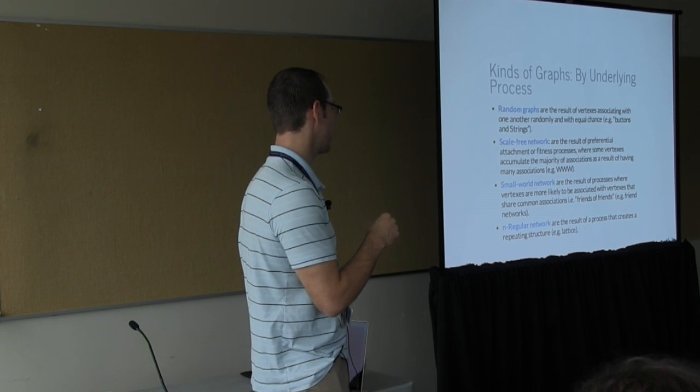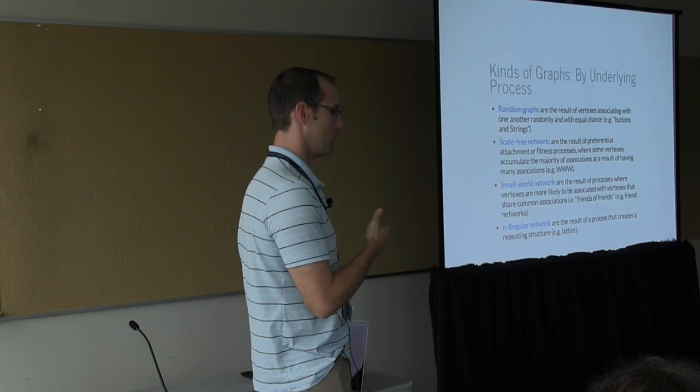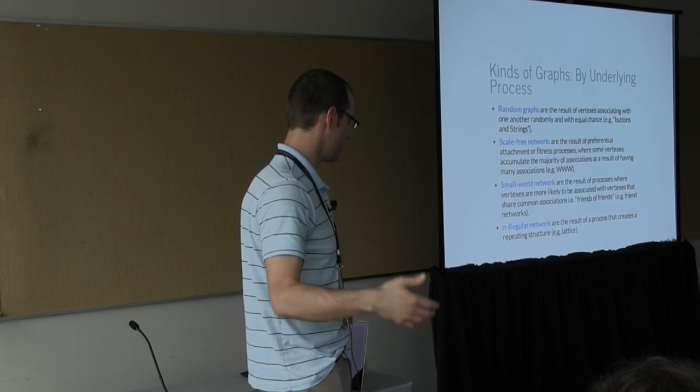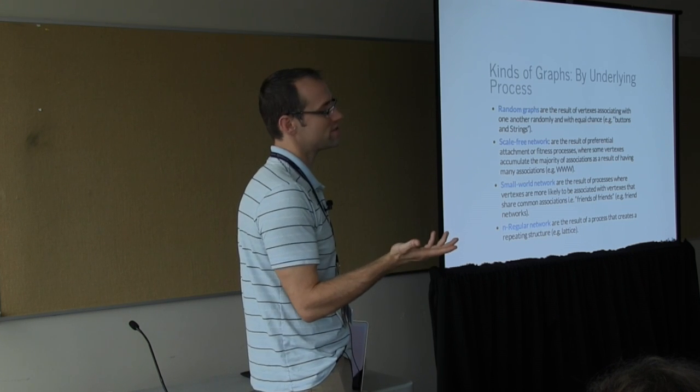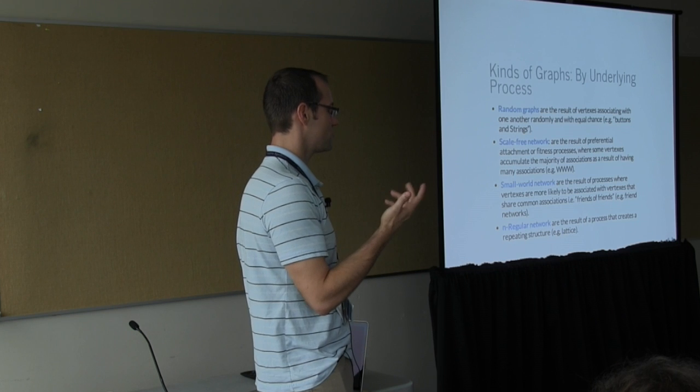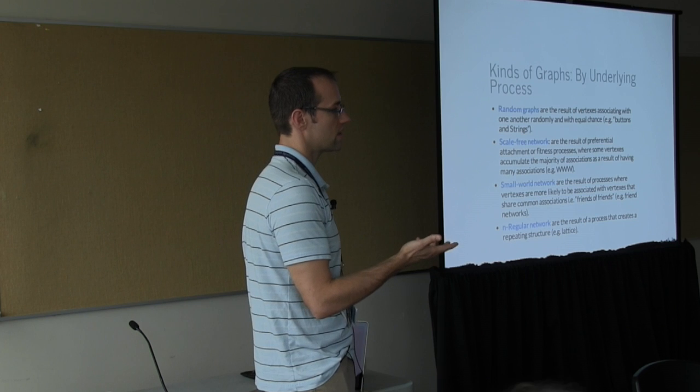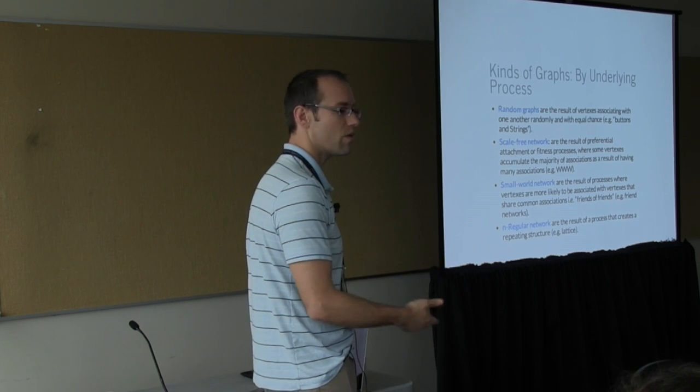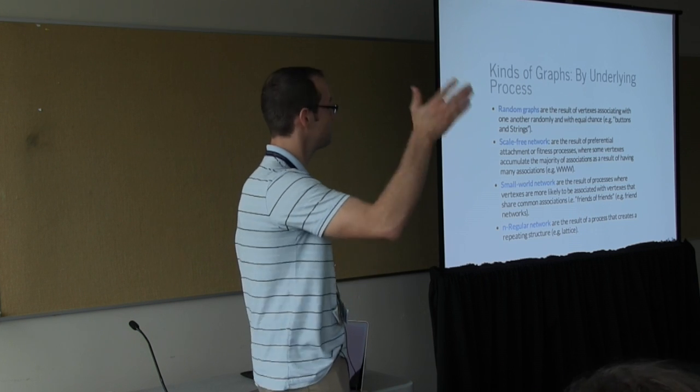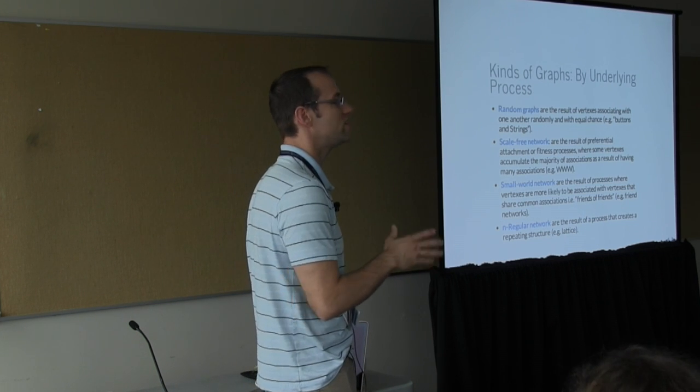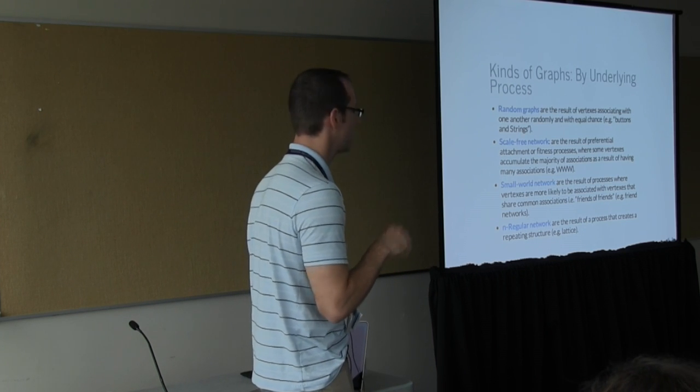And then of course you have your regular networks which you can define in tons of different ways that has some kind of repeating structure to it. There are tons of other representations that I'm not covering because there's just too much. But important networks also include things like directed acyclic graphs, Bayesian networks, Markov random fields. It's quite daunting approaching literature and trying to extract nuggets out of it.